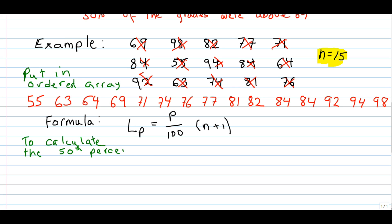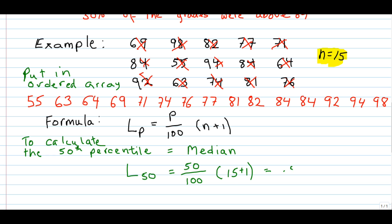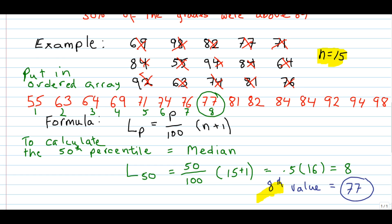Let's calculate the 50th percentile, which is also the median. Using the formula, L subscript 50 is equal to 50 over 100 times 15 plus 1. So we get 0.5 times 16, and 0.5 times 16 is 8. Now 8 is not the median — 8 is the location of where the number is for the 50th percentile. So we go back to the ordered array and look for the eighth value. We count to the eighth value and get 77.